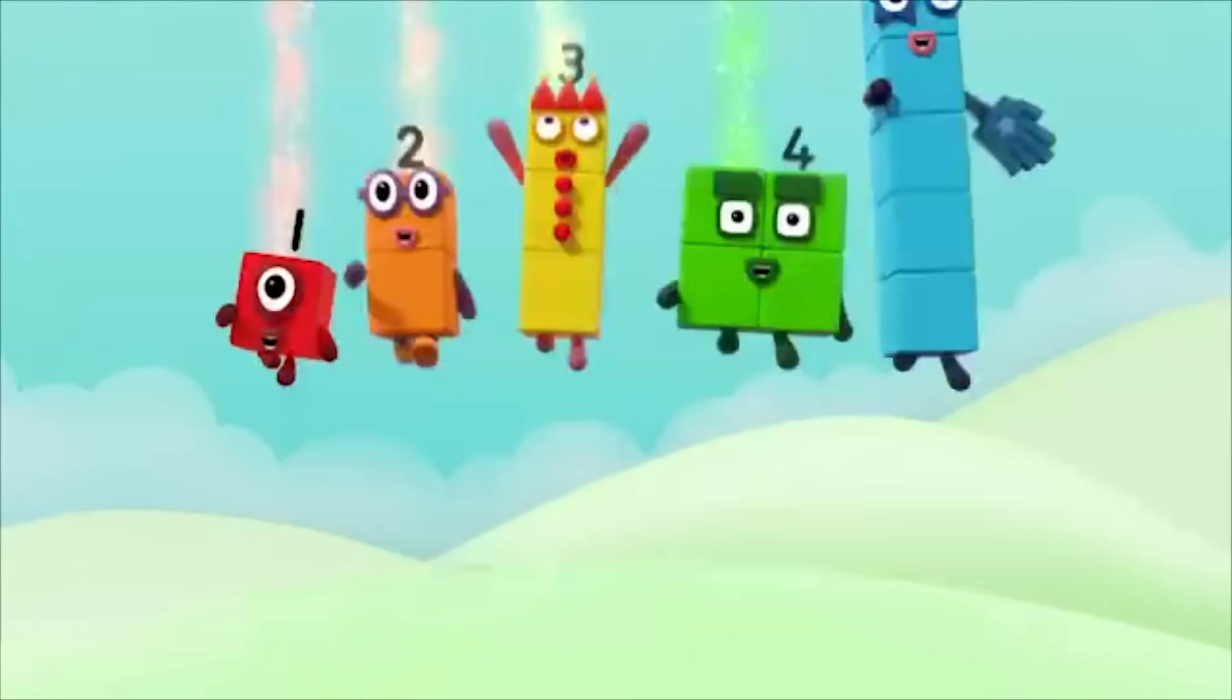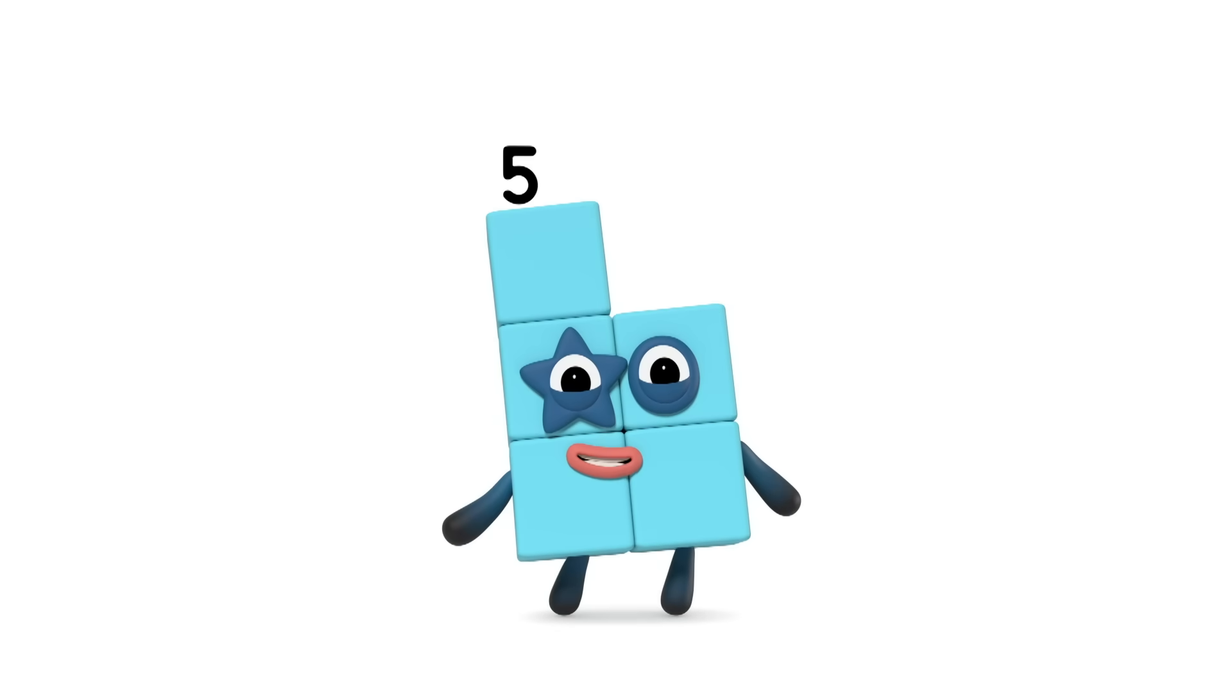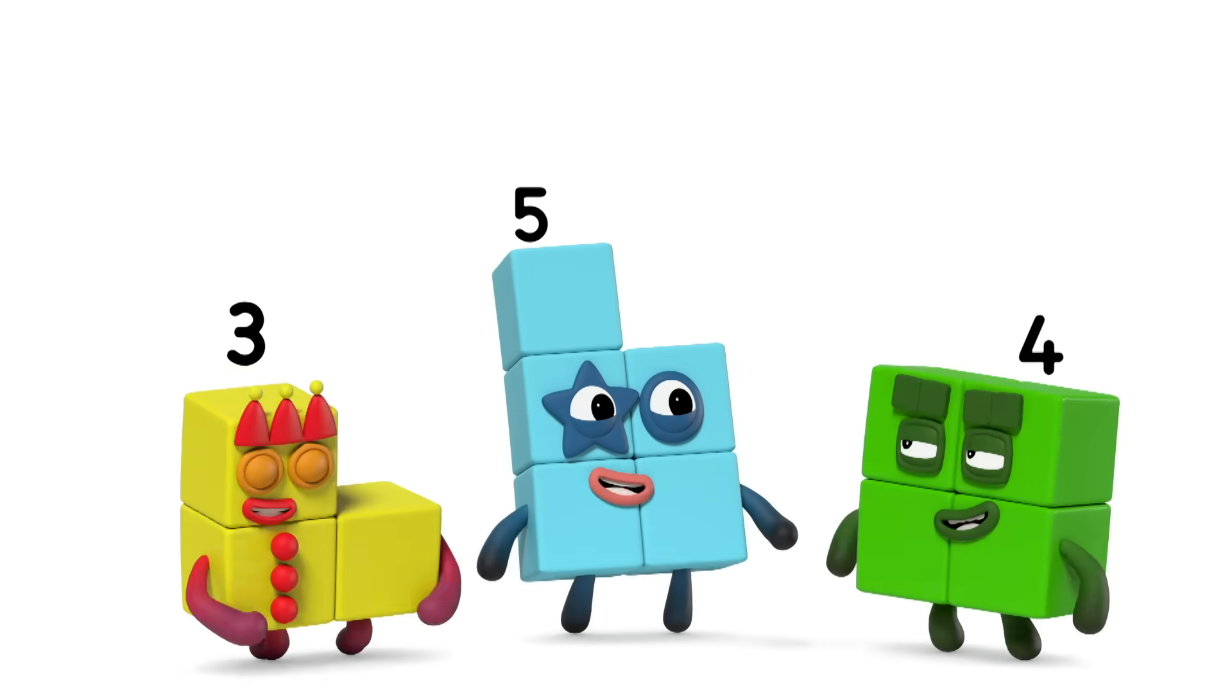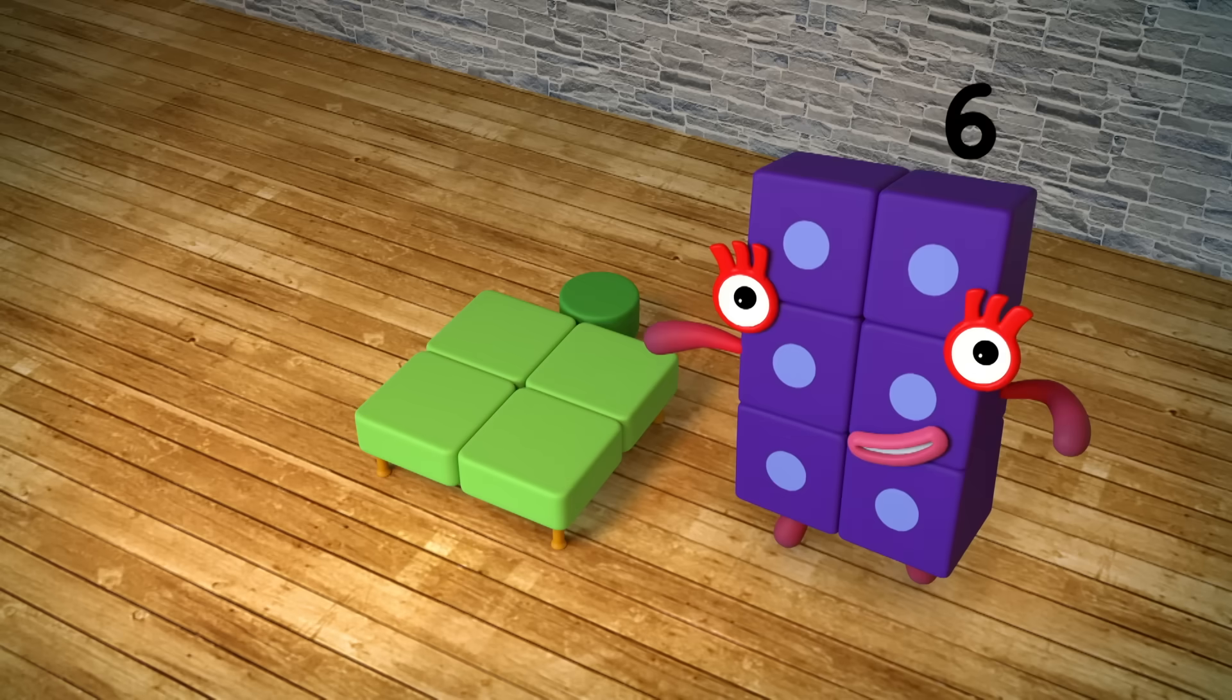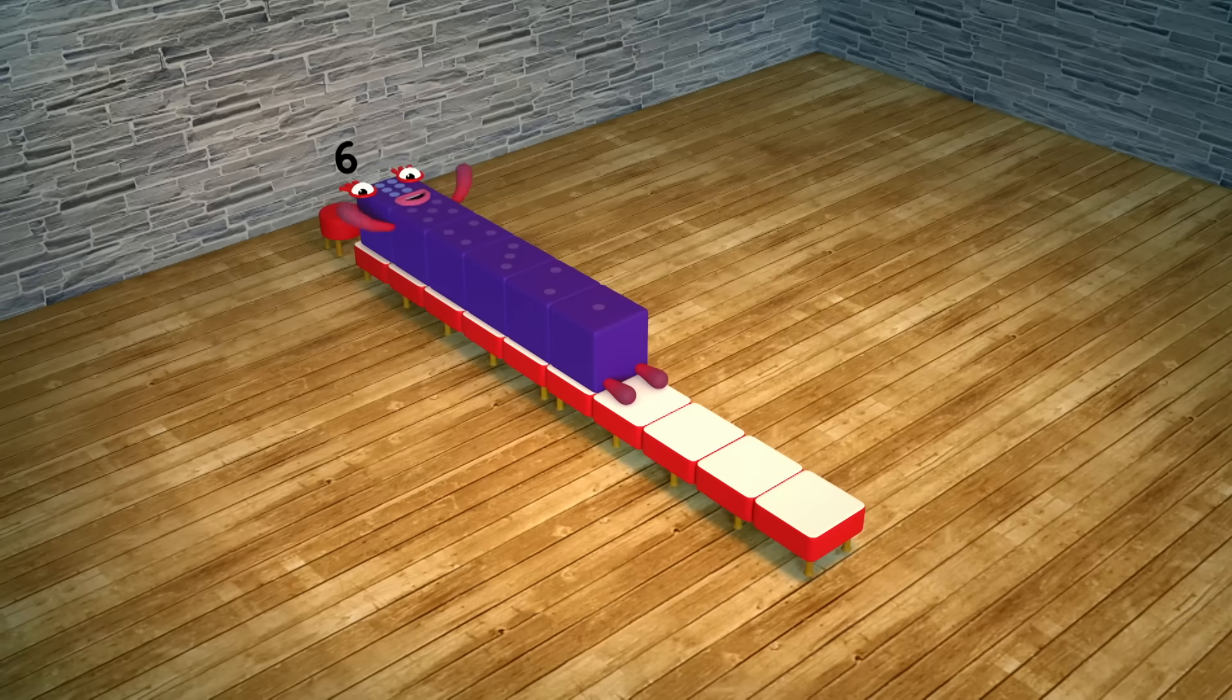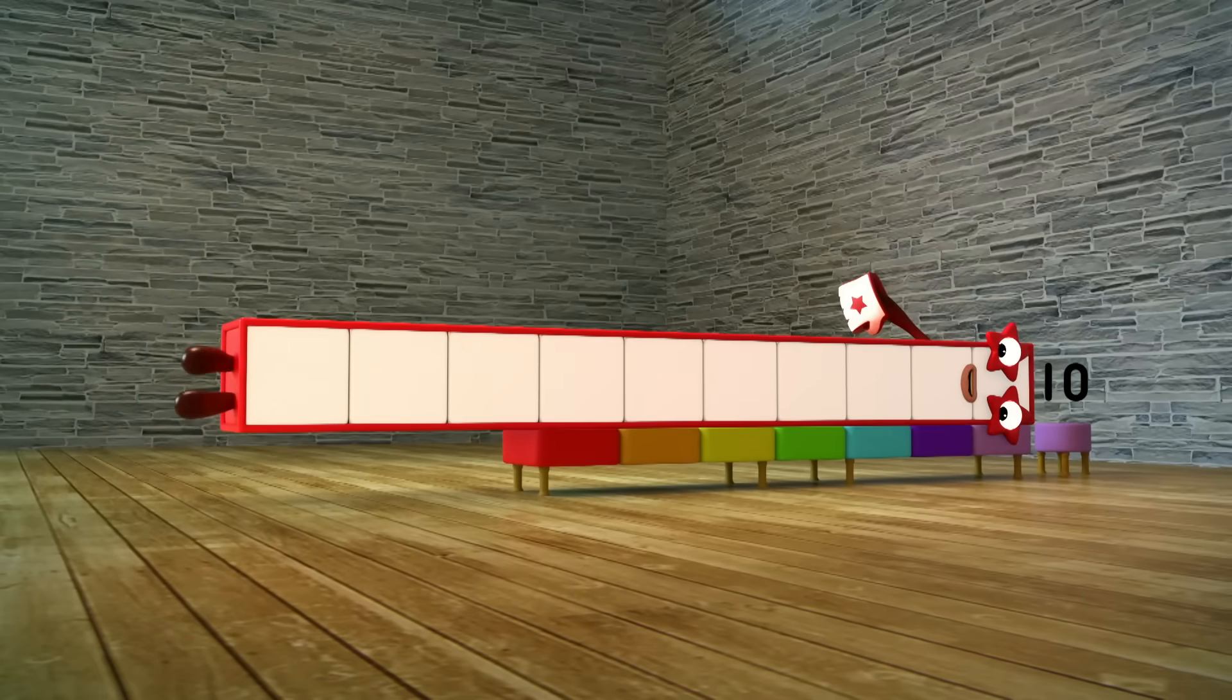You can count on us with the Numberblocks. If you're bigger than me, you can hide me as long as you make the right shape. If you're smaller than me, it'll never work, no matter what shape you make. Six won't fit into four's little bed. I can lie down in ten's bed instead. Seven's bed is too small for ten. My feet will stick right at the end.